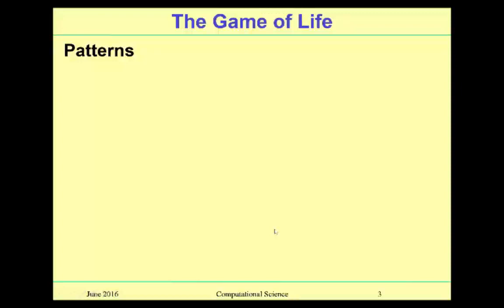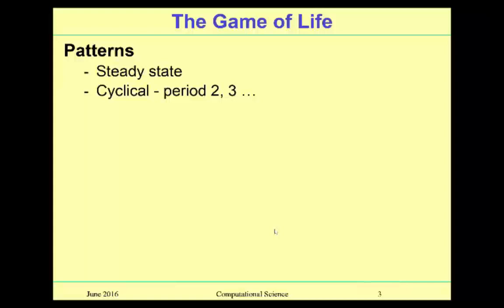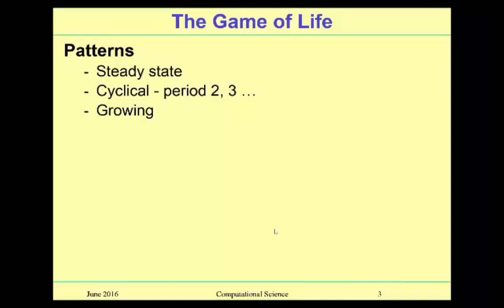So, what patterns do we see? Steady state patterns — something that stays the same all the time. Cyclical patterns with a certain period: a period of two, or a period of three would be something that starts, goes into another condition, then a third condition, and back to the first. We'll have to look and see if we can find something like that. Growing: the pattern we had was small and it got bigger and bigger, but eventually it collapsed and went into steady state. That had a lot to do with the boundary conditions — but if we had a bigger screen, perhaps it would have kept growing.